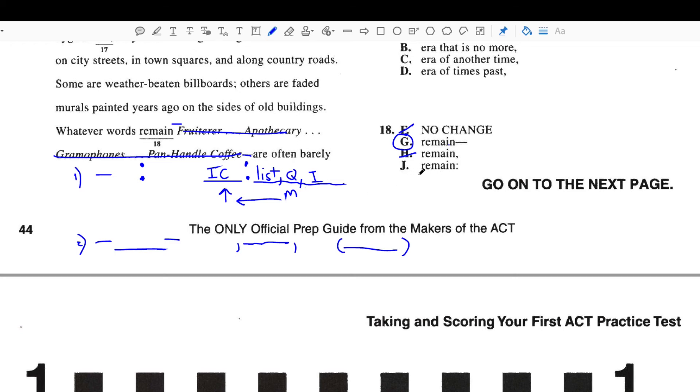Okay, how about answer choice J? We already answered this question. Right here we have colons. Whatever words remain. Is that an independent clause? No, it's not. So again, that would have to be wrong as well.